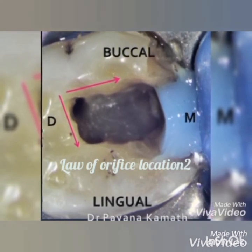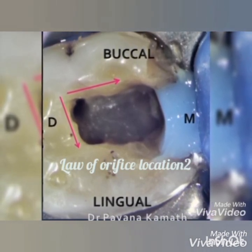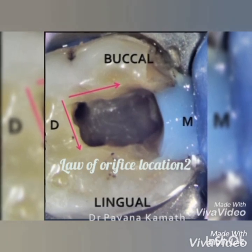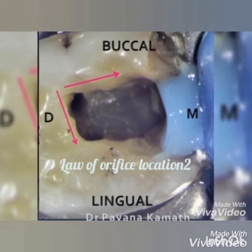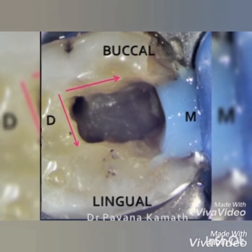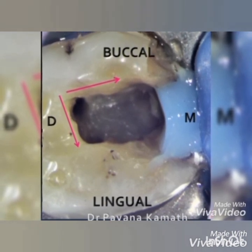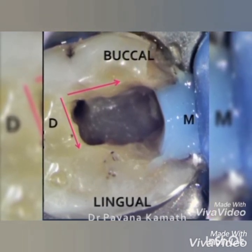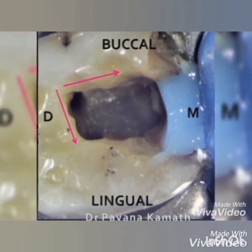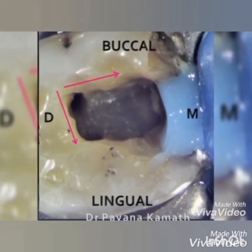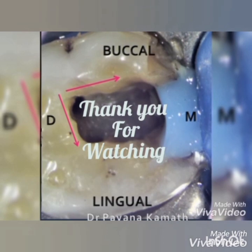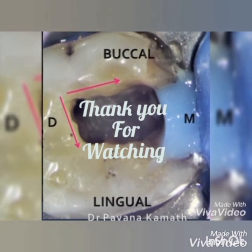The law of orifice location 2 says that the orifices are located at the angles of the junction of wall and floor — that is, at the corner or junction. Once the floor-wall junction is clearly seen, all the laws of symmetry and orifice location can be used to find the exact location, position, and number of the orifices.